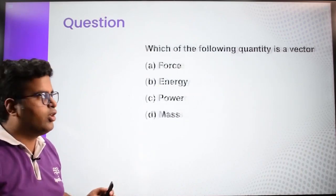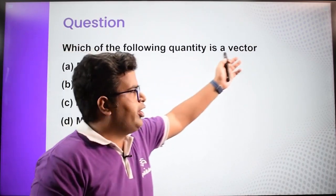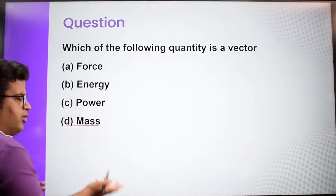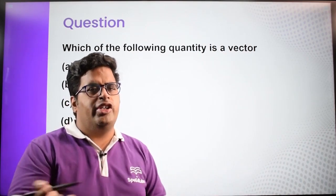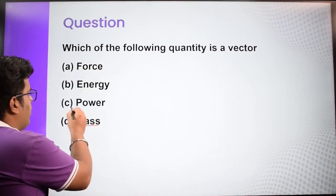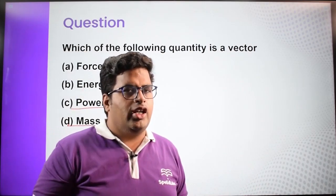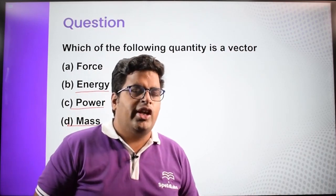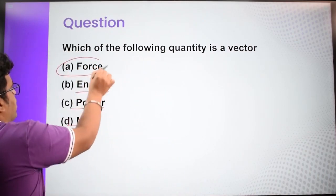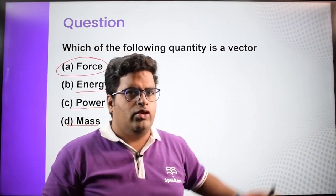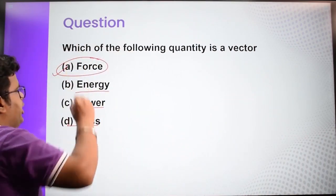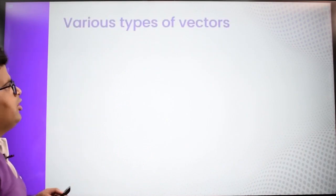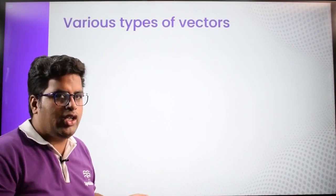Now let's see a question based on this: which of the following quantities is a vector quantity? Mass is a scalar — 15 kg, 20 kg. Power is also a scalar. Energy also has no direction, so it's a scalar. But force has magnitude and direction, so force is your vector quantity. The correct option is A — force. Now let's look at various types of vectors.